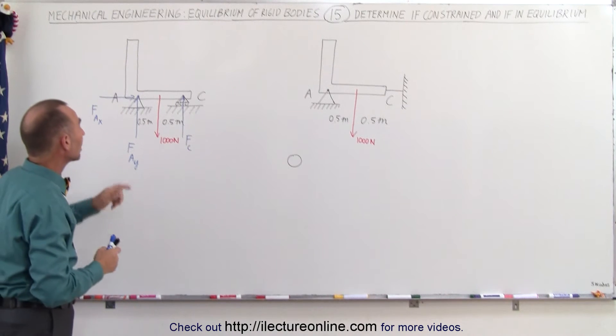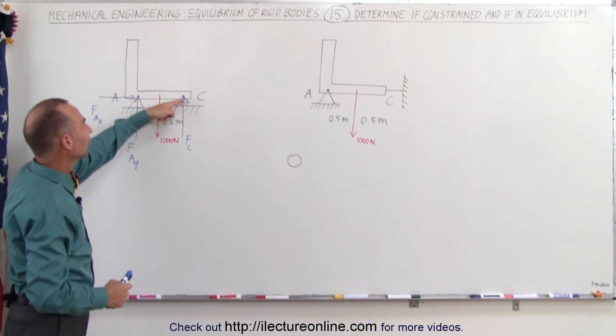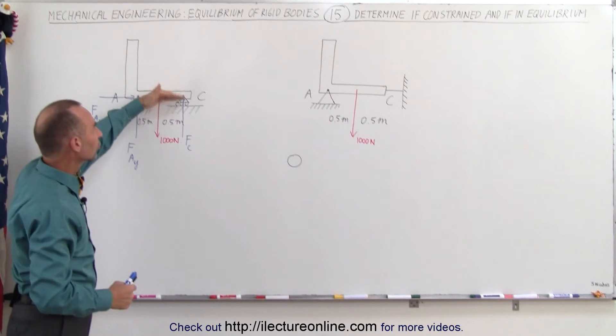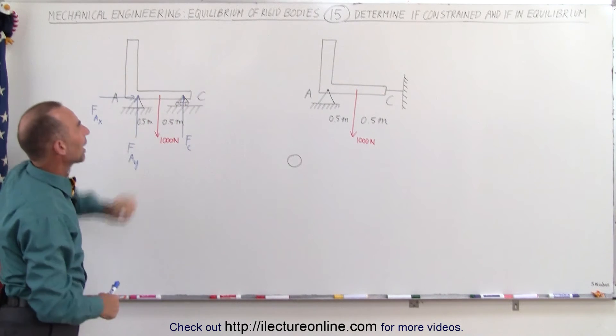Now is this properly constrained? Well, the fixture prevents it from going left to right, and this prevents it from going in the vertical direction. We don't expect it to go up because of the force attached to this bracket.